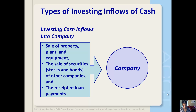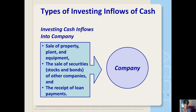Cash flows from investing activities include cash inflows from the sale of property, plant and equipment, and the sale of securities — so that would be stocks and bonds of other companies, not our own securities, which would fall in the financing category. That's one that trips people up every now and then. The sale of securities of other companies that we're just holding would show up in our investing section, as well as the receipt of loan payments.